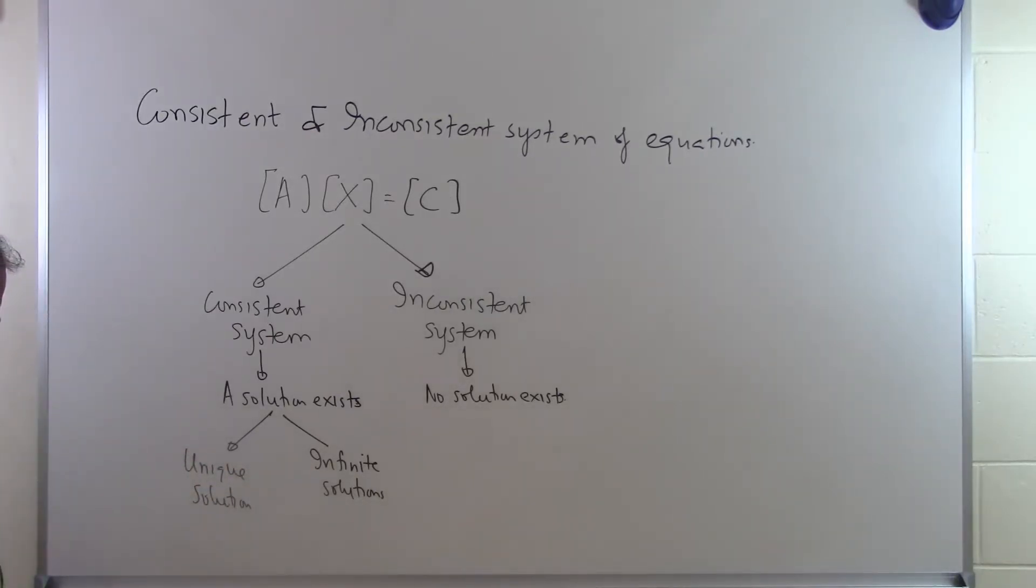Now people may say, is there a possibility of solutions being a finite number? Like we're only saying that either there is zero solution, one solution, or infinite solutions. Is there a possibility to have five solutions, let's suppose? That is not the case for simultaneous linear equations. There's a theorem to prove that and we'll do that later.